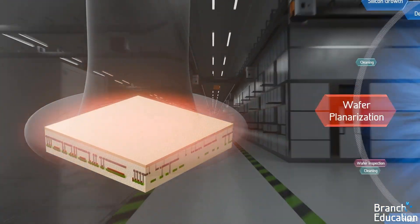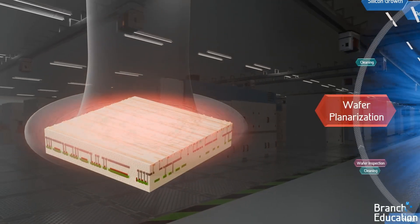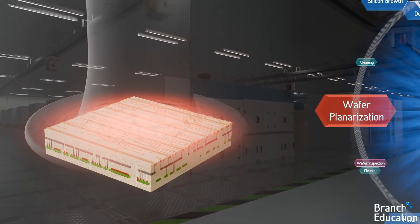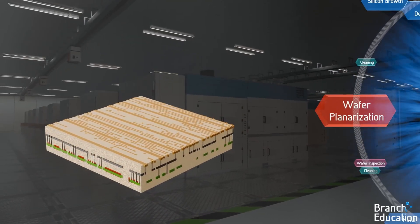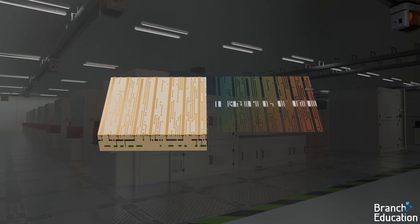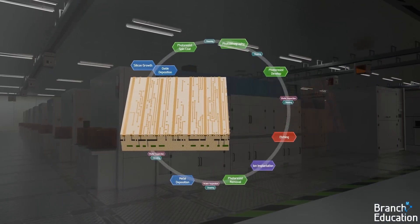Finally, the wafer is sent to a chemical mechanical planarization tool, where the metal is ground down so that all that remains is a flat layer of insulating silicon dioxide and conductive copper interconnects that match the pattern from the photomask.